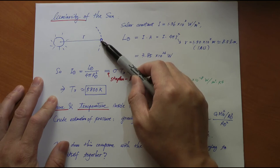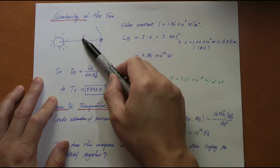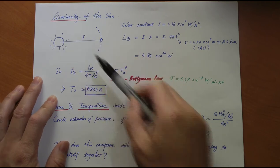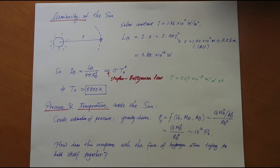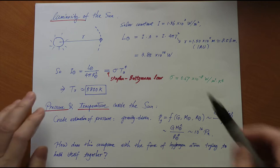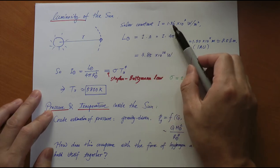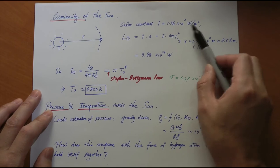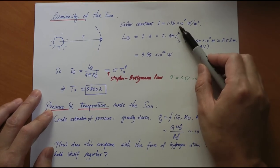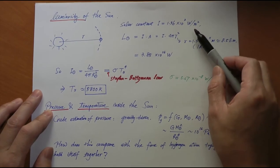Here is the earth. Here is the sun. This is r, which is also known as one AU or one astronomical unit. At that distance, the intensity of the energy from the sun intercepted is called a solar constant. It is 1.36 times 10^3 watts per meter squared, about 1,400 watts per meter squared.